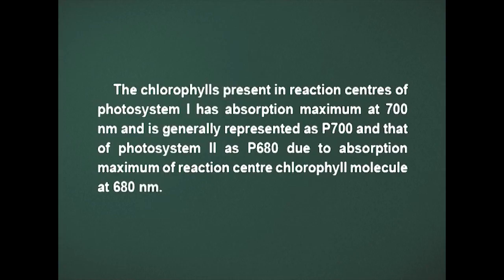Let us start with non-cyclic photophosphorylation. During light reaction of photosynthesis, plants and algae use the two photosystems, i.e. Photosystem 1 and Photosystem 2, to produce both ATP and NADPH through flow of electrons. The chlorophyll present in reaction centers of Photosystem 1 has absorption maximum at 700 nm and is generally represented as P700, and that of Photosystem 2 has P680 due to absorption maximum of reaction center chlorophyll molecule at 680 nm.